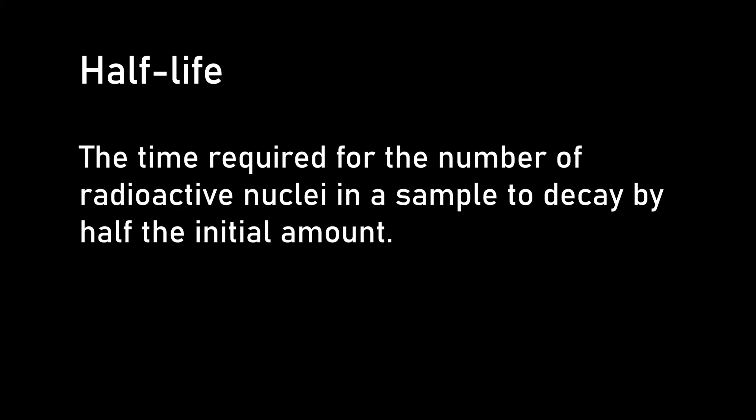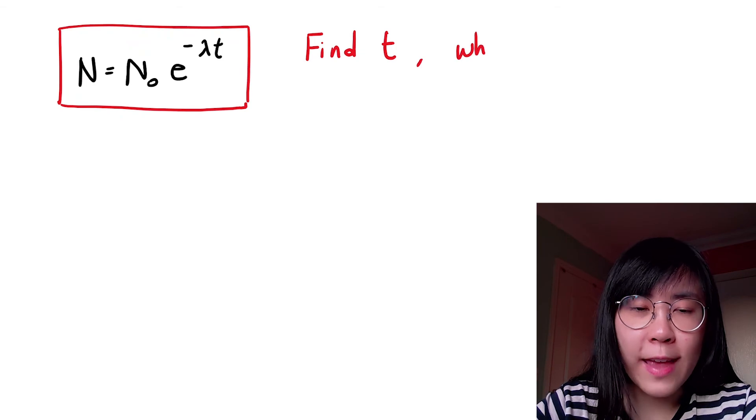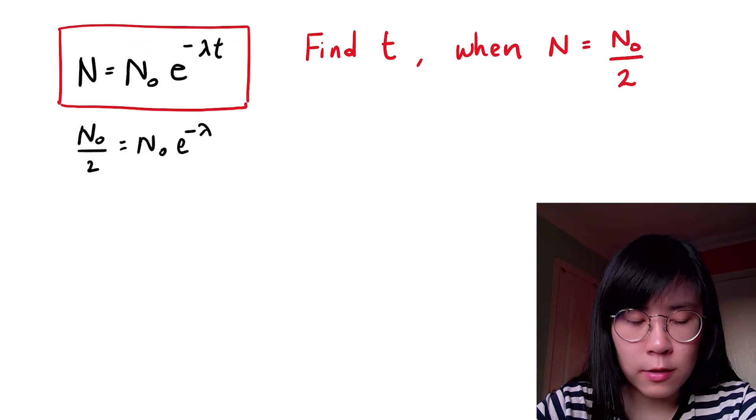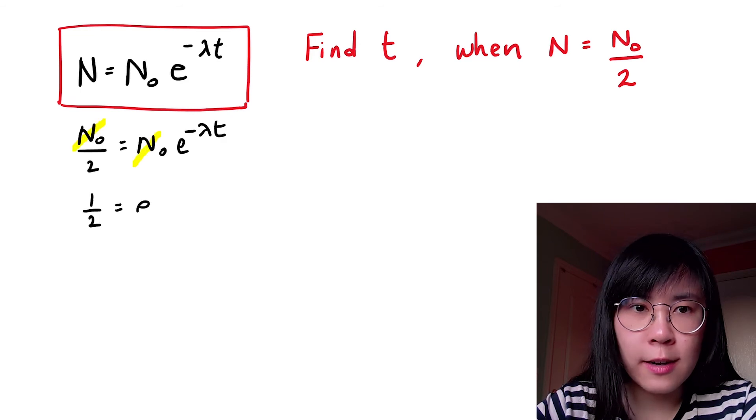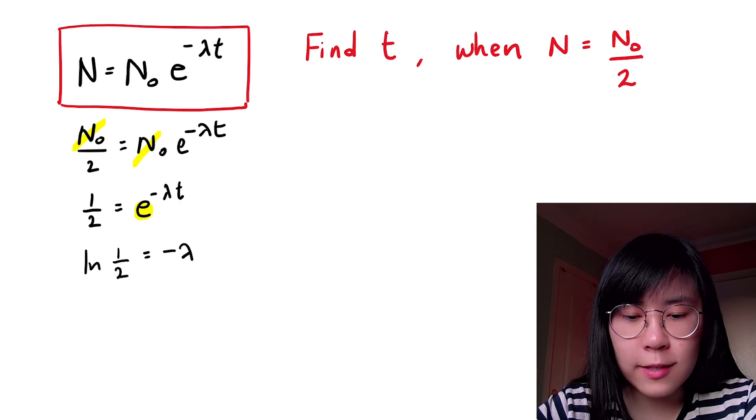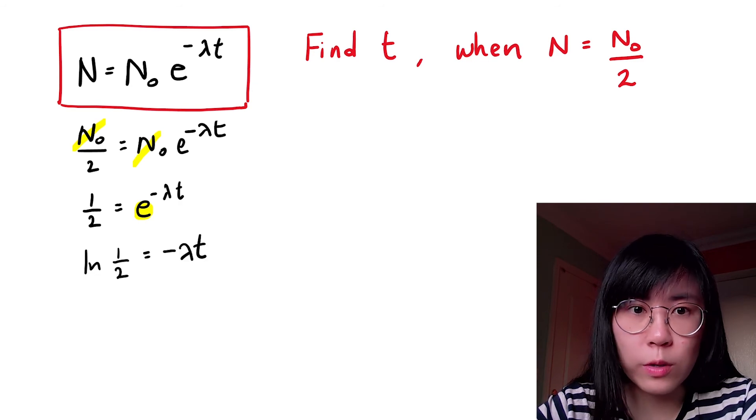So all we have to do is define time for when N is the initial amounts divided by two. Let's cancel these two guys. Now undo the exponents by logging both sides of the equation. And this is exactly the reverse of what we were doing before.